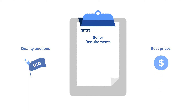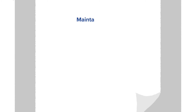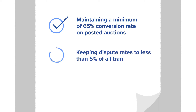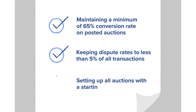B-Stock has three requirements for sellers on the platform: maintaining a minimum of 65% conversion rate on posted auctions, keeping dispute rates to less than 5% of all transactions, and setting up all auctions with a starting price of $100. Let's take a look at each of these requirements in more detail.